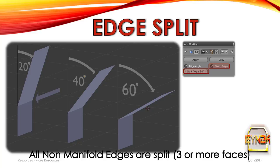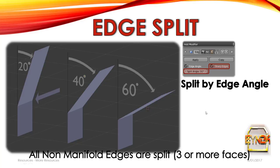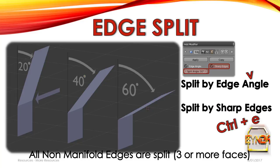The Edge Split modifier is not something I use very often, but here's how it works. You can split edges by angle — for example, at 30 degrees, edges changing by more than 30 degrees will be split while those below will not. Non-manifold edges — those that share three or more faces — are also split. You also have the option to split edges that are marked as sharp: Alt+right-click a ring loop, make it sharp by pressing Ctrl+E, and then split those edges using this modifier.